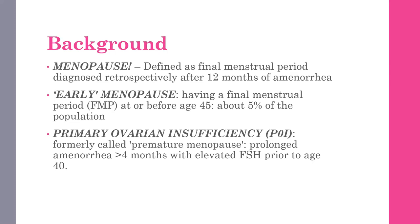Primary ovarian insufficiency, formerly called premature menopause or premature ovarian failure, is defined as prolonged amenorrhea of at least more than four months with elevated FSH prior to the age of 40. There are different age cutoffs in these diagnoses because age-wise, risk factors for various comorbidities arise, and you have to keep them in mind when selecting HRT and counseling the patient on duration.